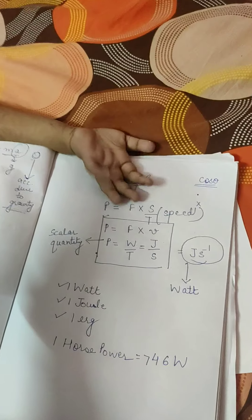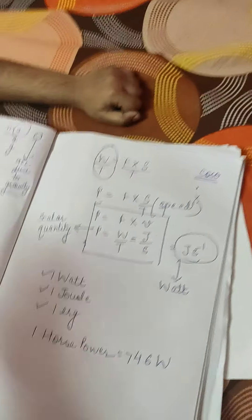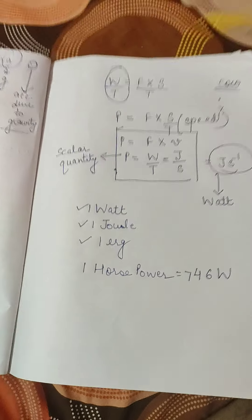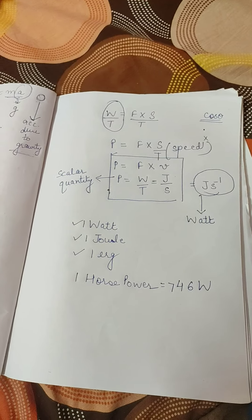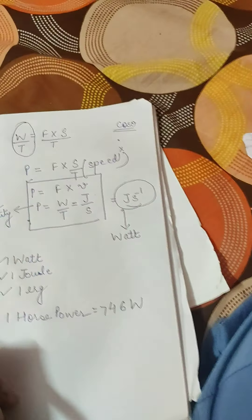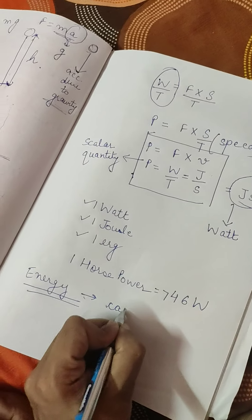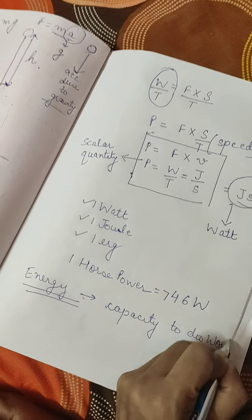Next is the energy portion, which is very simple. We have covered work done and power — power is a scalar quantity that is the rate of work done. Now, what is energy? In very simple language, energy is the capacity to do work. It is written in your book that energy equals work done.